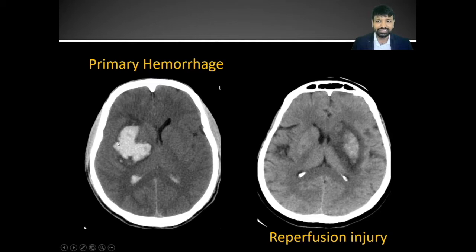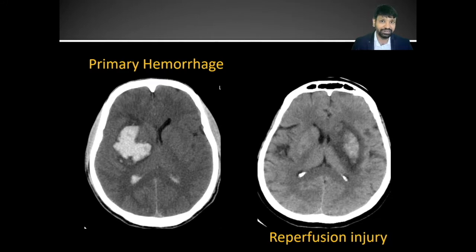One is the shape of the hemorrhage. Reperfusion injury will always be wedge-shaped because the infarct itself will be wedge-shaped, and the hemorrhagic changes which are happening within the infarct will also be wedge-shaped. Whereas a primary hemorrhage will have an irregular shape.